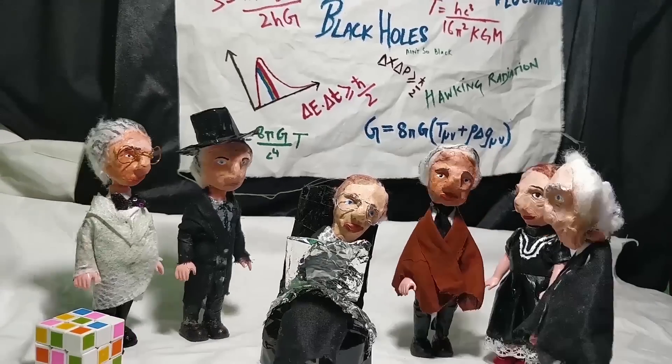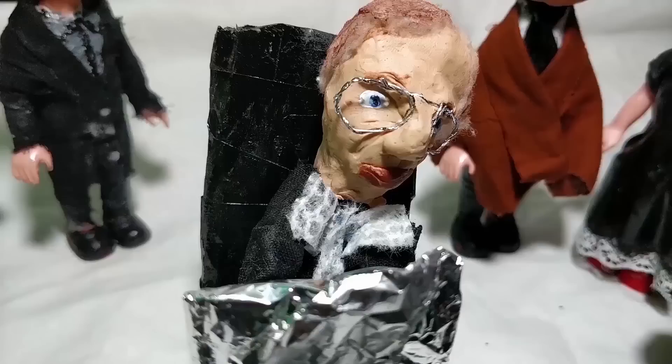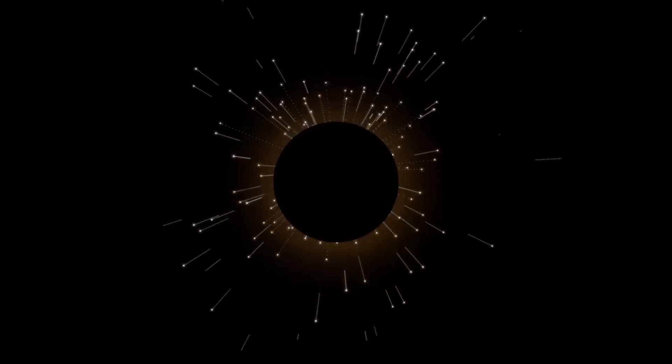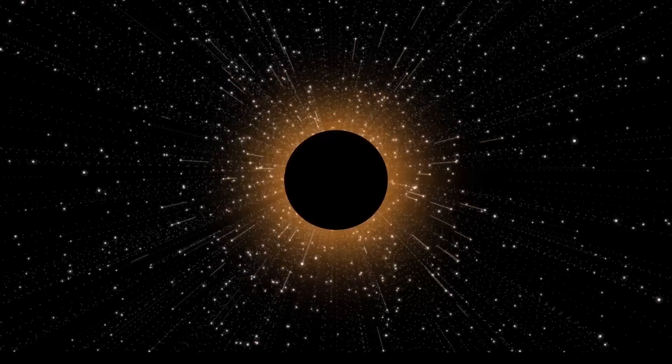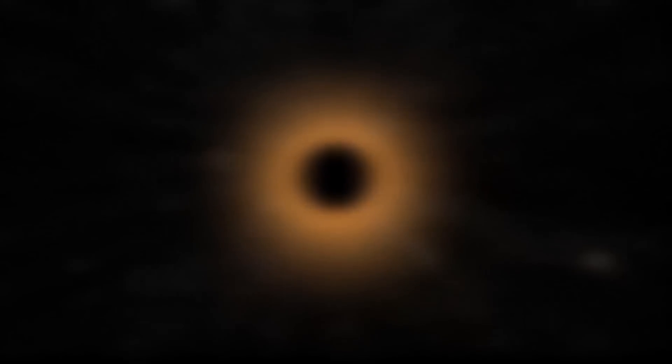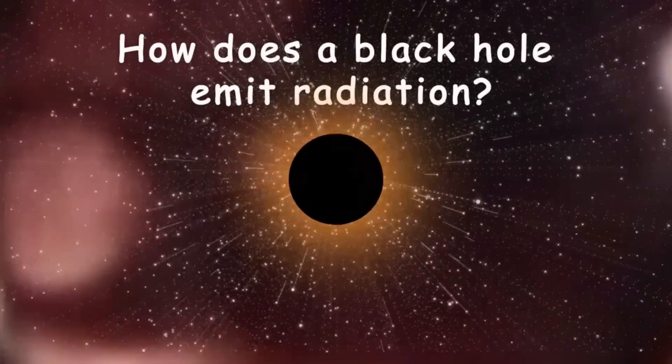In the 1970s, scientists wondered if black holes emit radiation, and that's when everything got blurry. But how does a black hole emit radiation? In fact, how can something escape a black hole?